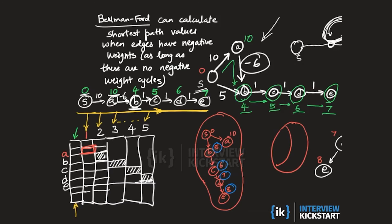This is one advantage of Bellman-Ford over Dijkstra: it can work even on graphs with negative edge weights, as long as there are no negative weight cycles. And like Dijkstra, Bellman-Ford also runs on undirected graphs in exactly the same way.